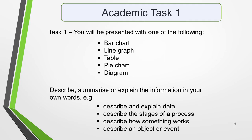In academic writing task 1 you'll be presented with one of the following: a bar chart, a line graph, a table, a pie chart, or a diagram. You're required to describe, summarize, or explain the information in your own words. For example, you may be asked to describe and explain data, describe the stages of a process, describe how something works, or describe an object or event.